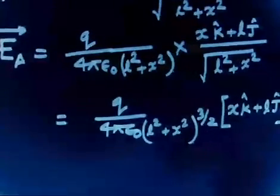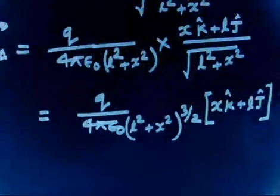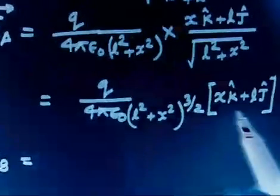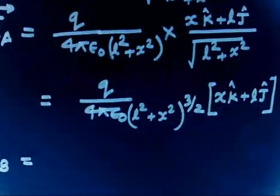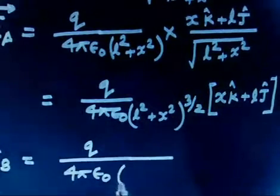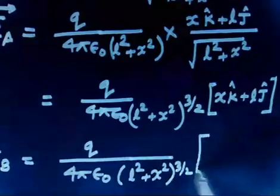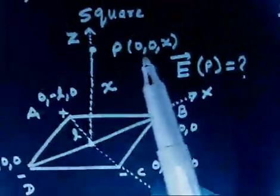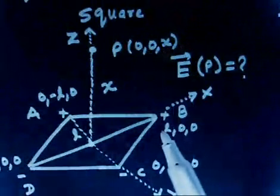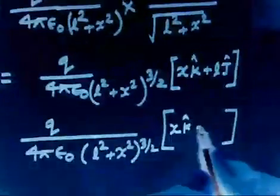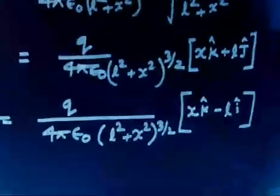Similarly, the fields due to B, C, and D have the same magnitude factor Q / [4π ε₀ (L² + x²)^(3/2)]. Only the unit vector changes because each vertex has a different position. For vertex B, the vector BP = xK − LI, so the field due to B is proportional to (xK − LI).